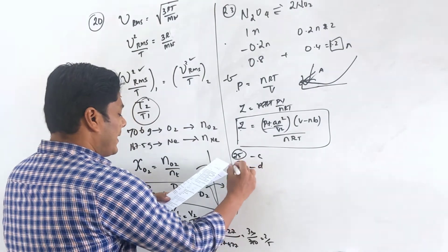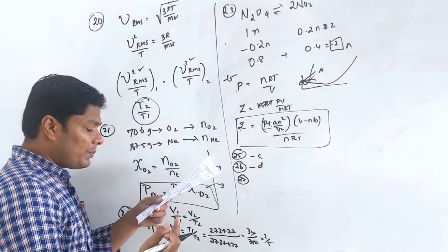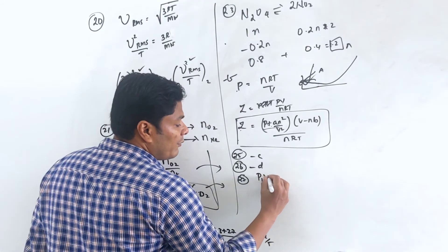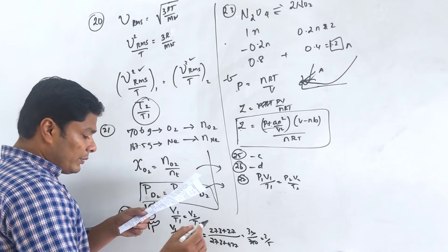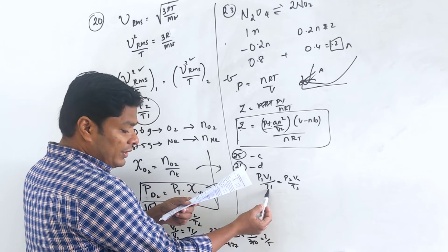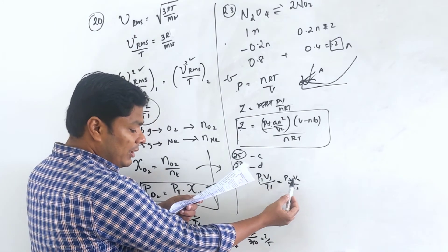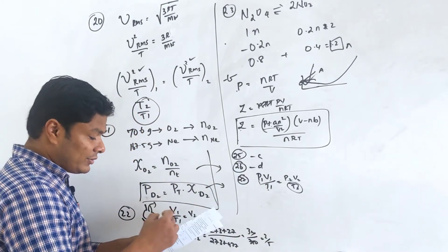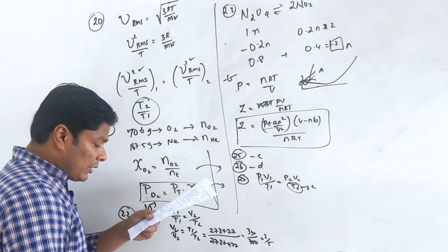Question 27: A gas sample occupies 100 mL at given temperature and 740 mmHg. When volume and pressure change, find the new temperature. Using P1V1/T1 = P2V2/T2, solve for T2 in Kelvin, then convert to Celsius by subtracting 273. Option C.